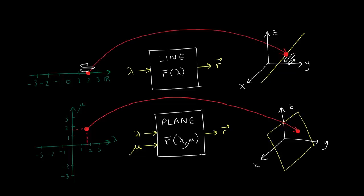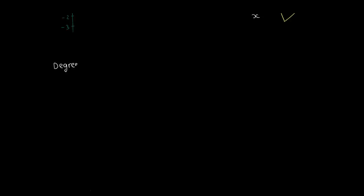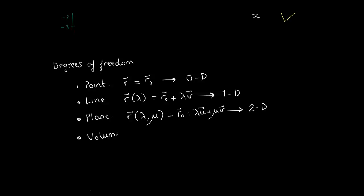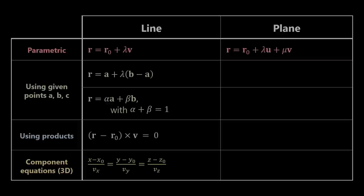It maps each point in the whole plane of parameters lambda and mu into each point of the plane in three-dimensional space. Note that if we wiggle around the value of lambda across the real line, this will in turn wiggle around the position vector along the line. The number of independent parameters that we can vary freely is also referred to as degrees of freedom. A point has no degrees of freedom and is a zero-dimensional entity. Lines have one degree of freedom and are one-dimensional, while planes have two degrees of freedom and are two-dimensional. We can even write volumes using three degrees of freedom.